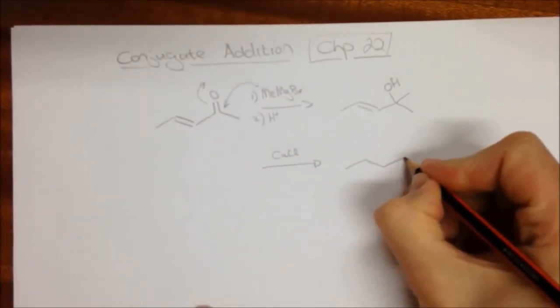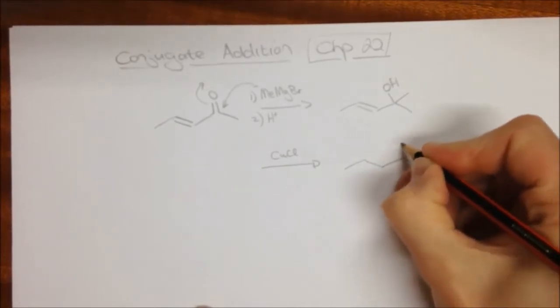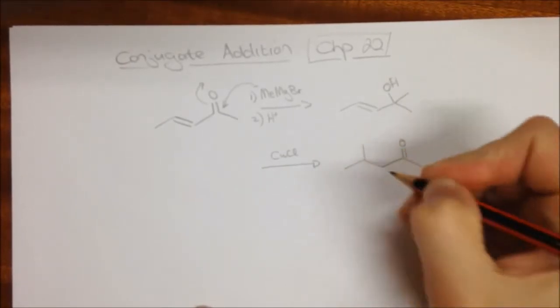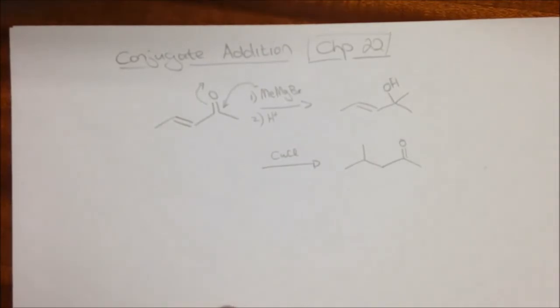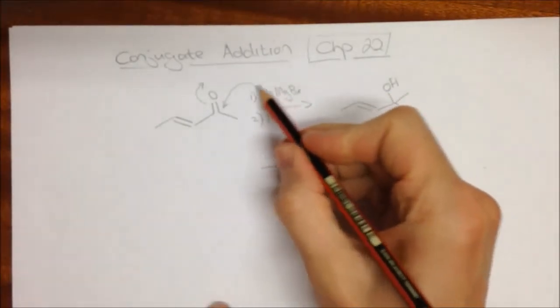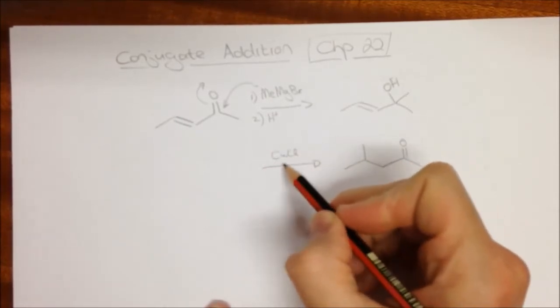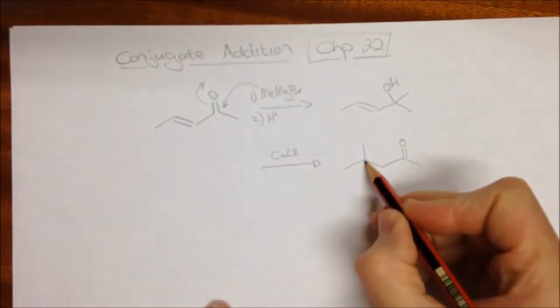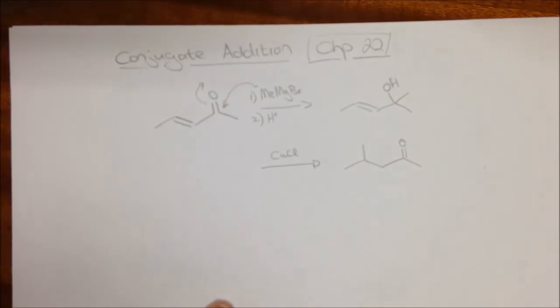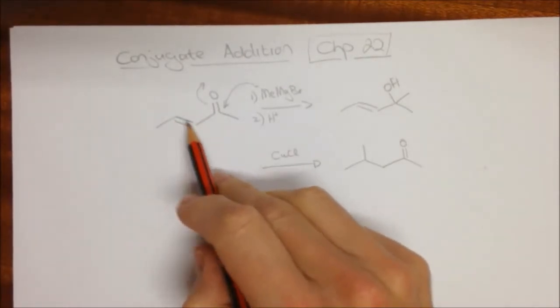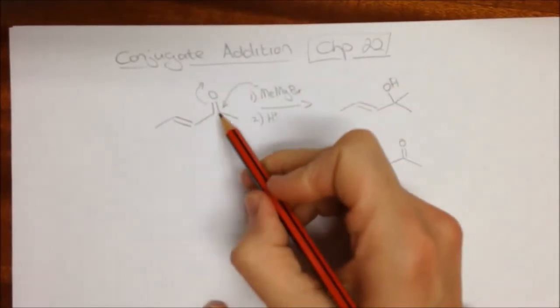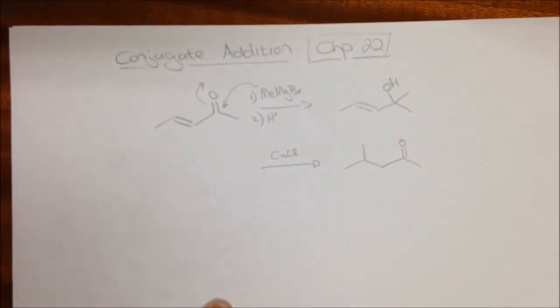The product now looks like this. The ketone is still there, but we have a methyl group over there. So this methyl group from the Grignard reagent, because we've now added copper, suddenly goes to this position over here on this molecule, and not the carbonyl.